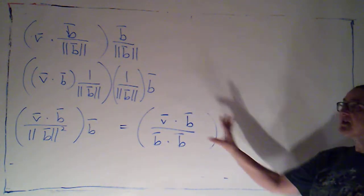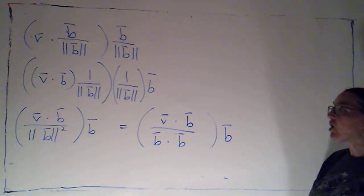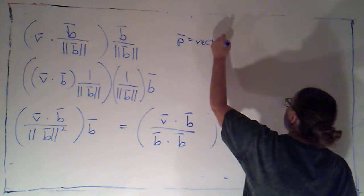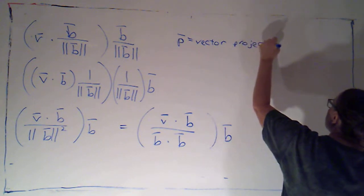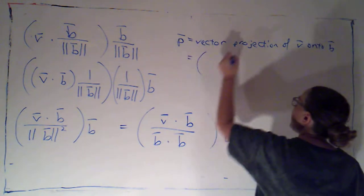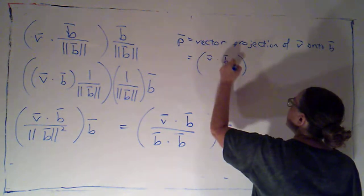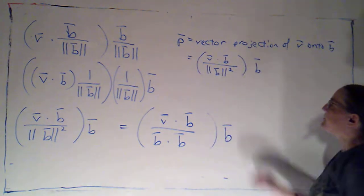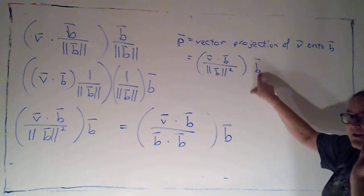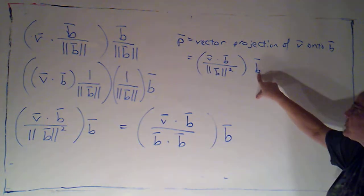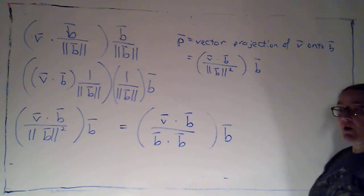Alright, so that gives me a formula for projecting onto an arbitrary vector. So, I can say that P is the vector projection of V onto B. And that's always going to be given by this formula. V dotted with B over, take your pick of how you want to write the denominator, copies of B. Obviously, B is not the zero vector. Remember, we did always specify that B had to be a non-zero vector, because it has to be determining a direction.